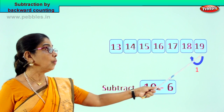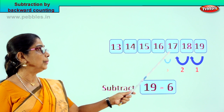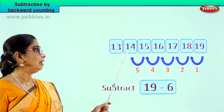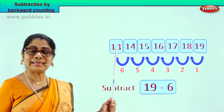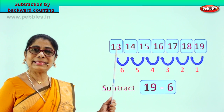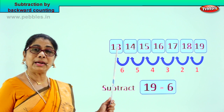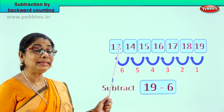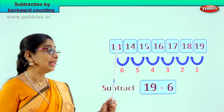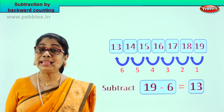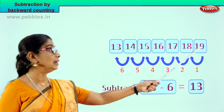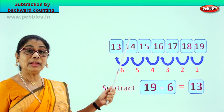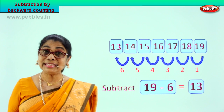From 19. 1, 2, 3, 4, 5, 6. We counted from 19, 6 steps backward, and we arrived at a number. What is the answer? 19 minus 6 gives you answer 13. We have 19 here, we counted 6 steps backward, you arrived at the answer: 13.